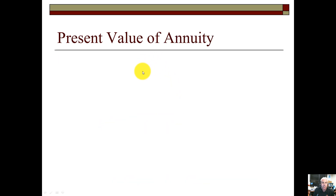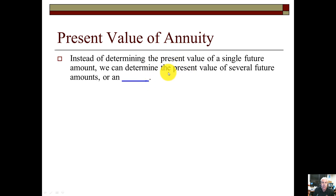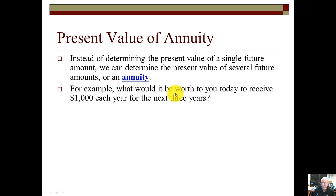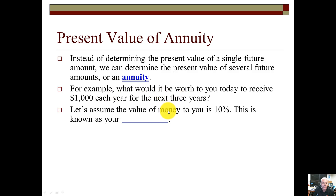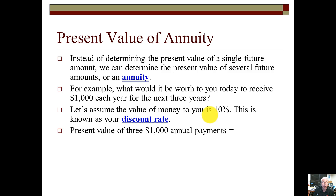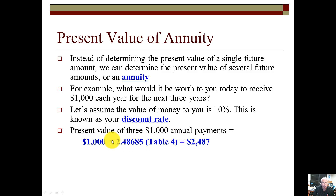For the present value of an annuity subtype, instead of one future amount, we determine the present value of several future amounts. For example: what would it be worth today to receive $1,000 each year — sight word — for the next three years, at a cost of capital of 10%? From Table 4, looking up 3 years and 10%, the factor is 2.4865. Multiply by $1,000, and the present value of this annuity stream is $2,487.